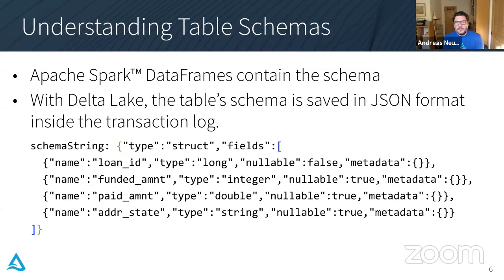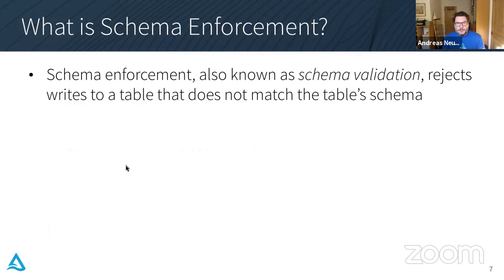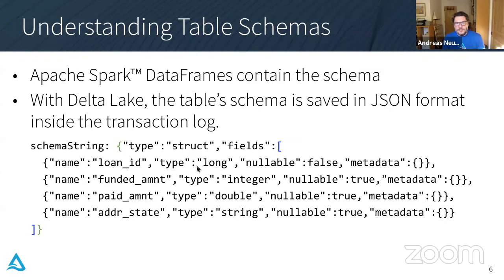So what is a table schema? The table schema describes the structure of our data. In Apache Spark, for example, every data frame has a schema. If you use Delta Lake as your storage format, then the schema of that data becomes the schema of the table and it is saved in JSON format inside the transaction log. Basically it's a list of fields — each field has a name, a type, and it'll also say whether it's nullable. If it's nullable, that means the field doesn't have to be present. But if nullable is false, then every record written to the table is required to have that column.